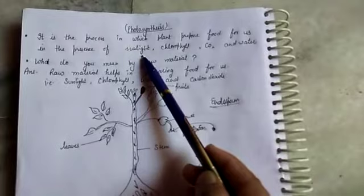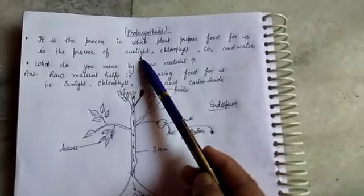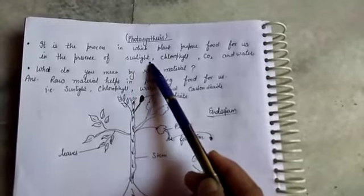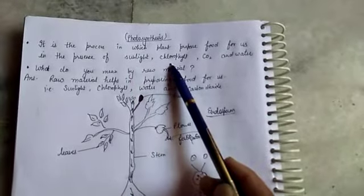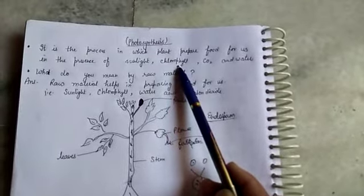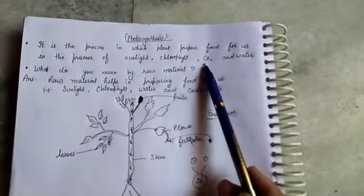Sunlight is the main source of energy that we obtain from the sun. In this, solar energy changes into chemical energy. Chlorophyll is the green color of the plant by which we prepare the food.